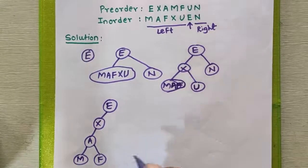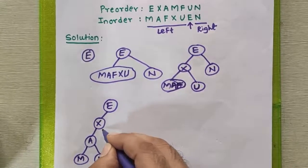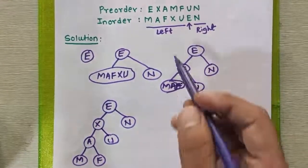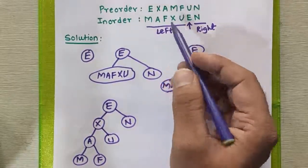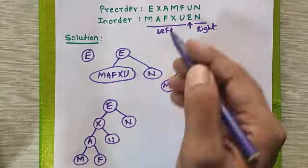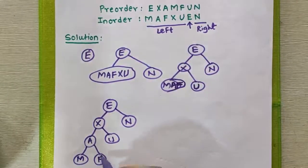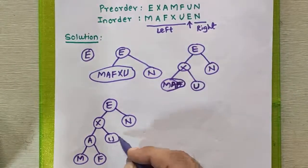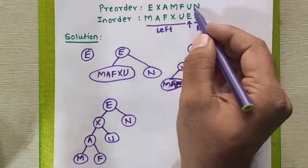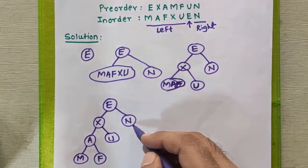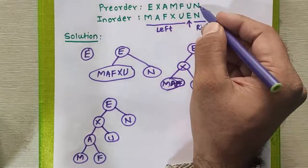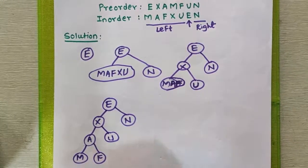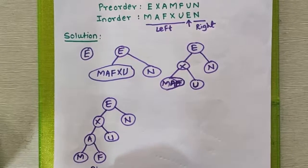M goes to the left side, F goes to the right side, U is here, and N remains as it is. Taking the next element from the pre-order sequence: M is already placed, F is already placed since there is only one value in that position, U is also placed to its proper place, and N is also placed to its proper place. We have reached the last element of the pre-order sequence, so we have completed the final design of the binary tree.